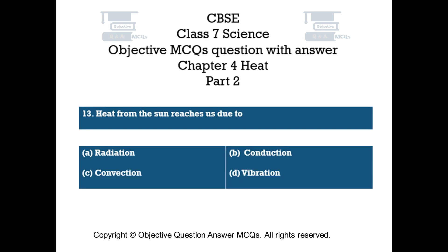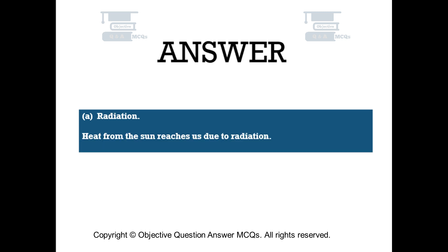Question number 13. Heat from the sun reaches us due to — Option A: radiation, Option B: conduction, Option C: convection, Option D: vibration. The right answer is Option A — Radiation. Heat from the sun reaches us due to radiation.